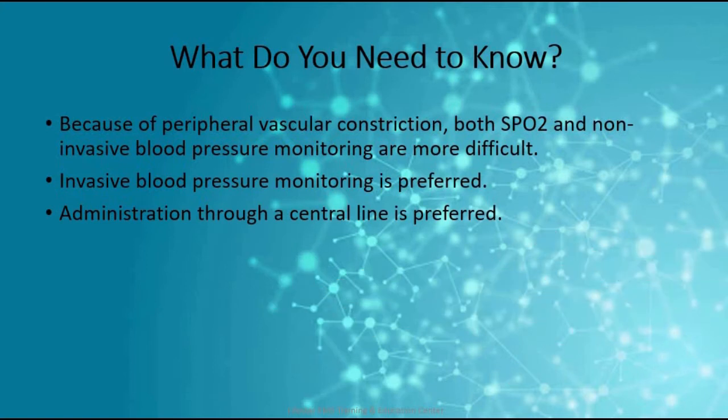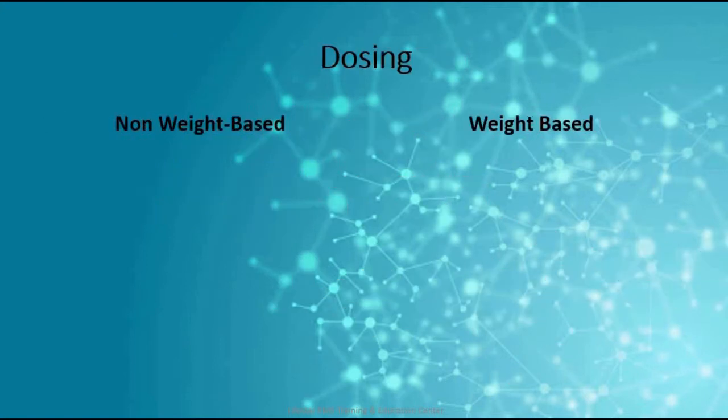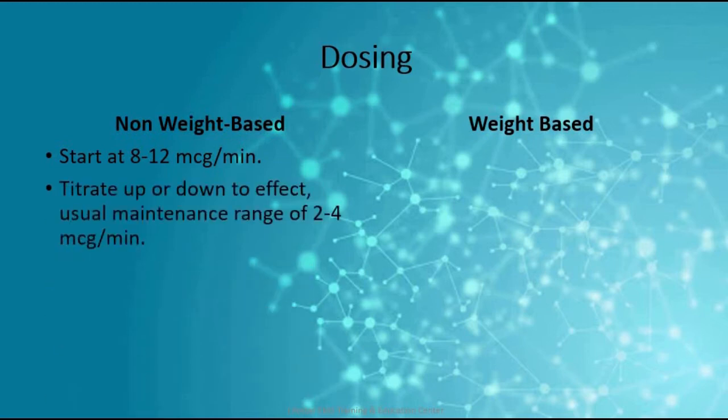Two kinds of dosing, the weight-based and the non-weight-based. Check your local protocols for the right numbers, but these numbers are pretty standard. The recommendation is to start at 8 to 12 micrograms per minute and then titrate up or down. You're usually going to titrate down. So a maintenance dose is very typically somewhere between 2 and 4 micrograms a minute.